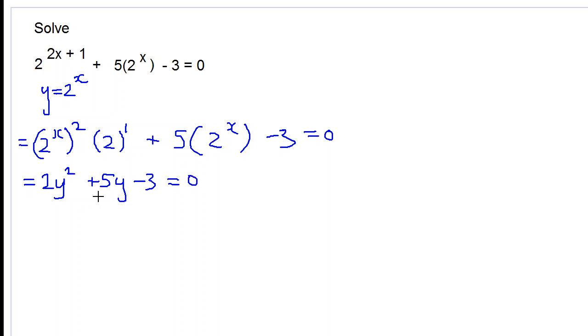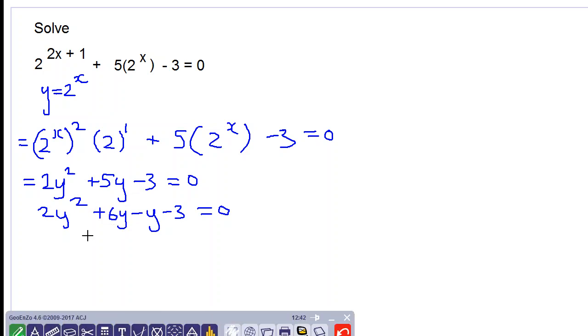So we want to factorize this quadratic expression. We have 2y squared plus 6y minus y minus 3 is equal to 0. We found two terms to replace the middle term with, and when we multiply 2 by negative 3 we get negative 6.